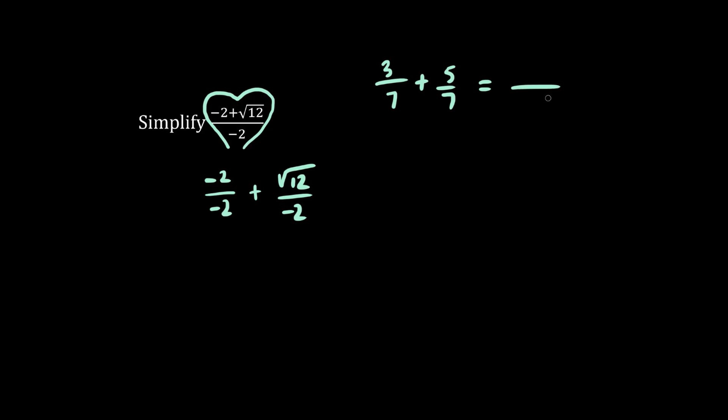If we have something like 3 over 7 plus 5 over 7, we know that we can combine these two terms into one term, we have 3 plus 5 over 7. So essentially, we have this pattern which can be broken apart into two terms, just like we did over here. What is minus 2 divided by minus 2? The answer is 1.